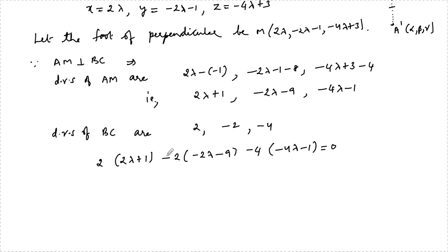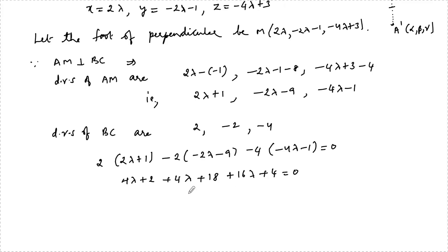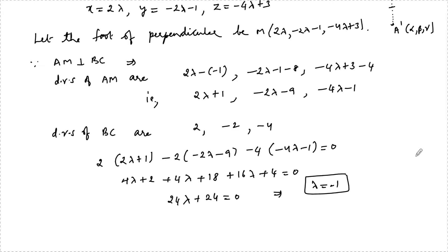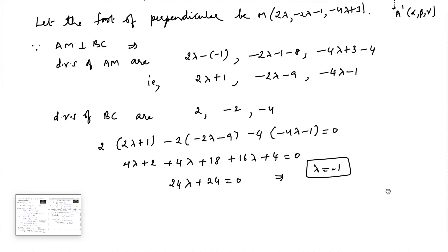Setting the dot product equal to zero: 4λ + 2 + 4λ + 18 + 16λ + 4 = 0, giving 24λ + 24 = 0, so lambda = −1. With this we can find the point M.